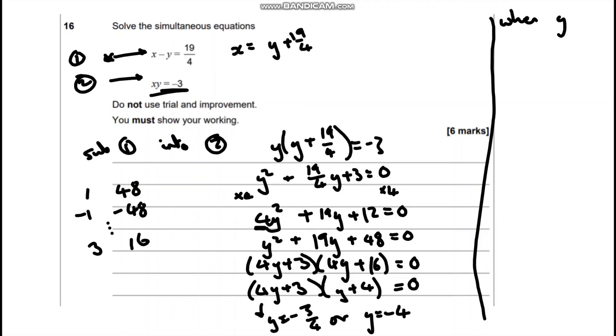When y equals negative 3 quarters, I think substituting into the first one would be easiest. So we're going to end up with x plus (because a negative times negative is a positive) 19 over 4. So x equals 16 over 4, which is 4.